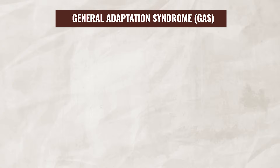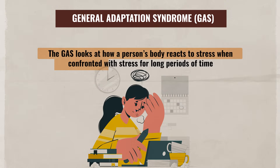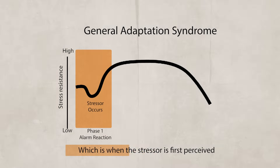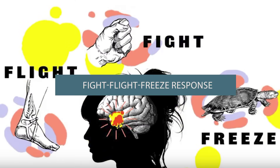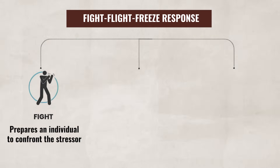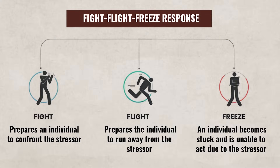Since we are talking about stress, we should also talk about General Adaptation Syndrome, or GAS for short. The GAS looks at how a person's body reacts to stress when confronted with it for long periods of time. It consists of three stages, with the first stage being alarm reaction — this is when the stressor is first perceived. During this stage, a person will experience the fight-flight-freeze response. The fight response prepares an individual to confront the stressor, flight prepares them to run away, and freeze is when an individual becomes stuck and unable to act. The body will often release hormones such as adrenaline or cortisol to prepare the individual to confront, flee, or freeze from the stressor.